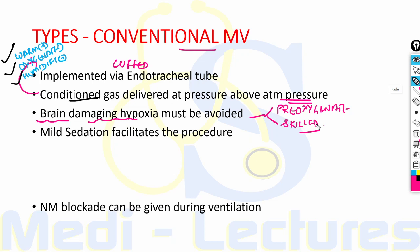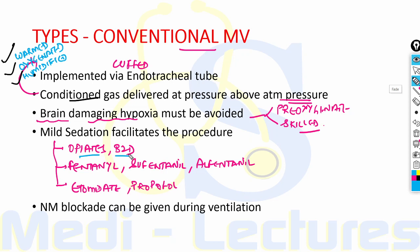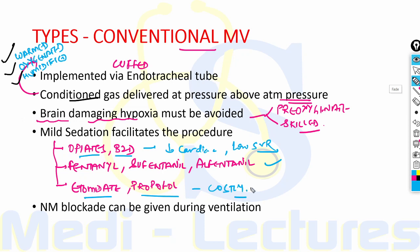Mild sedation facilitates intubation and can be done via opiates or benzodiazepines, though these can have deleterious effects on hemodynamics in patients with decreased cardiac function and low systemic vascular resistance. Fentanyl is an acceptable alternative. Etomidate and propofol are very good with few side effects but are costly. Neuromuscular blockade can be given during ventilation but should be avoided in renal failure, tumor lysis syndrome, crush injuries, drugs causing hyperkalemia, and muscular dystrophy. Succinylcholine in particular should be avoided.